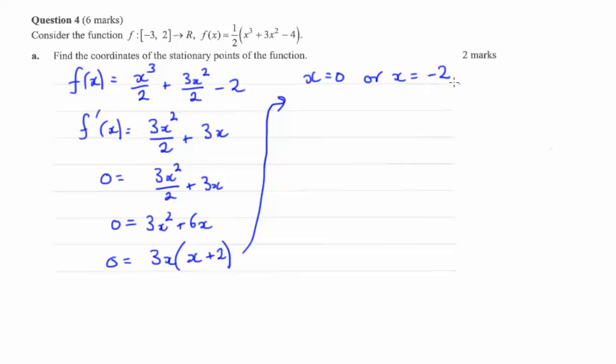So we haven't answered the question yet because it wants the coordinates of the stationary points, not just the x values. So let's find f of 0. That is going to equal, that's all going to disappear, that's going to be negative 2.